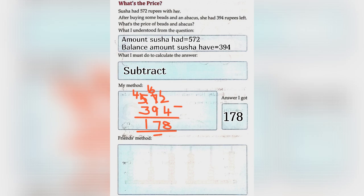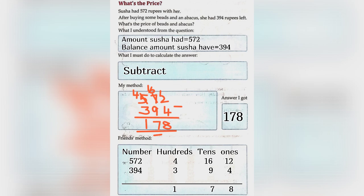Friends method. Number hundreds, tens, ones. So, here 572 is written as 4 hundreds, 16 tens, 12 ones. 394 is written as 3 hundreds, 9 tens, 4 ones. So, when we minus, we get the answer 178.